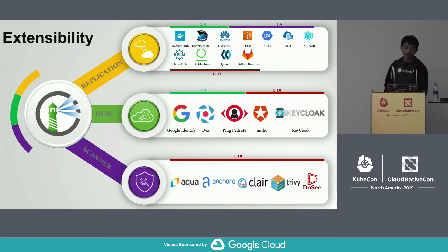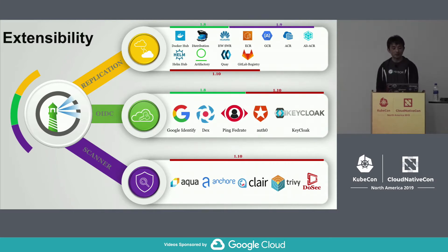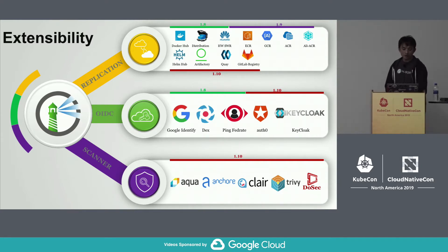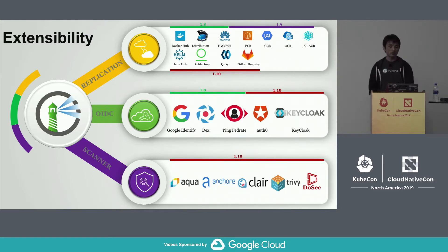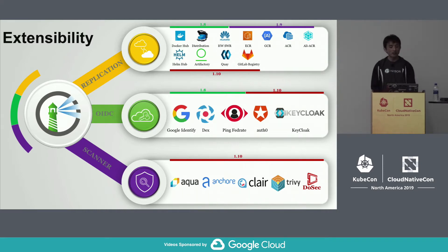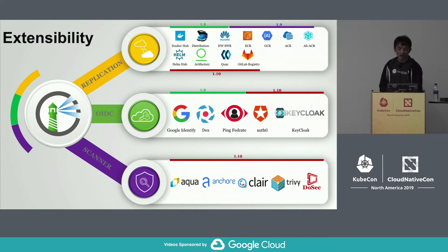Harbor can plug and play with all your existing investments in infrastructure, identity, and container security. Replication can help you transfer content among different registries. There is a registry adapter interface spec for easily extending Harbor to support replication with other external registries. In 1.8 we support Docker Hub, Docker Distribution, and Huawei Cloud Registry. In 1.9, most public registry services are covered like ECR, GCR, ACR, and Alibaba container registries. In the upcoming 1.10, we support Helm Hub, GForg, Artifactory, Quay, and the GitLab registry. Most of the adapters are contributed by the community.